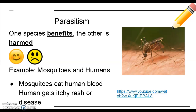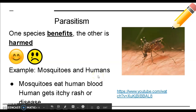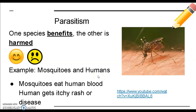Next is parasitism. In parasitism, one species is benefited and the other is harmed. One example is mosquitoes and humans: mosquitoes benefit because they feed on human blood, while humans are harmed because we get an itchy bug bite or rash, or even worse, mosquito-borne diseases like malaria. In fact, the world's most deadly animal is the mosquito, because most animal-caused deaths on the planet are caused by mosquito-borne illness.